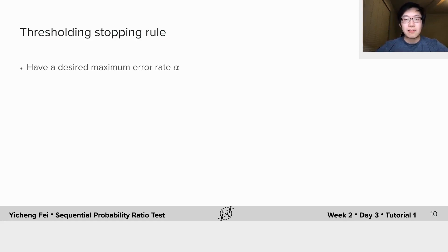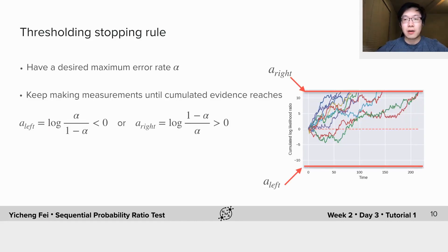So in this way, the evidence threshold A is related to error rate threshold alpha by these two formulas. In our case, A left is smaller than zero and A right is greater than zero, and they are opposite of each other.